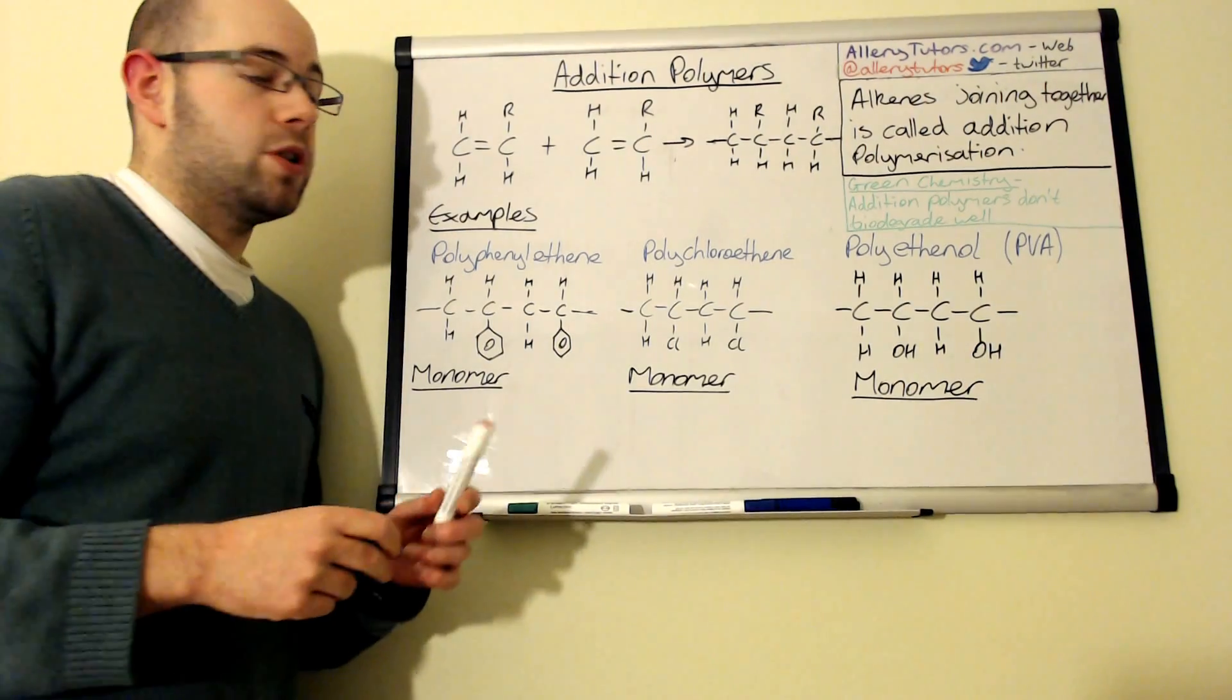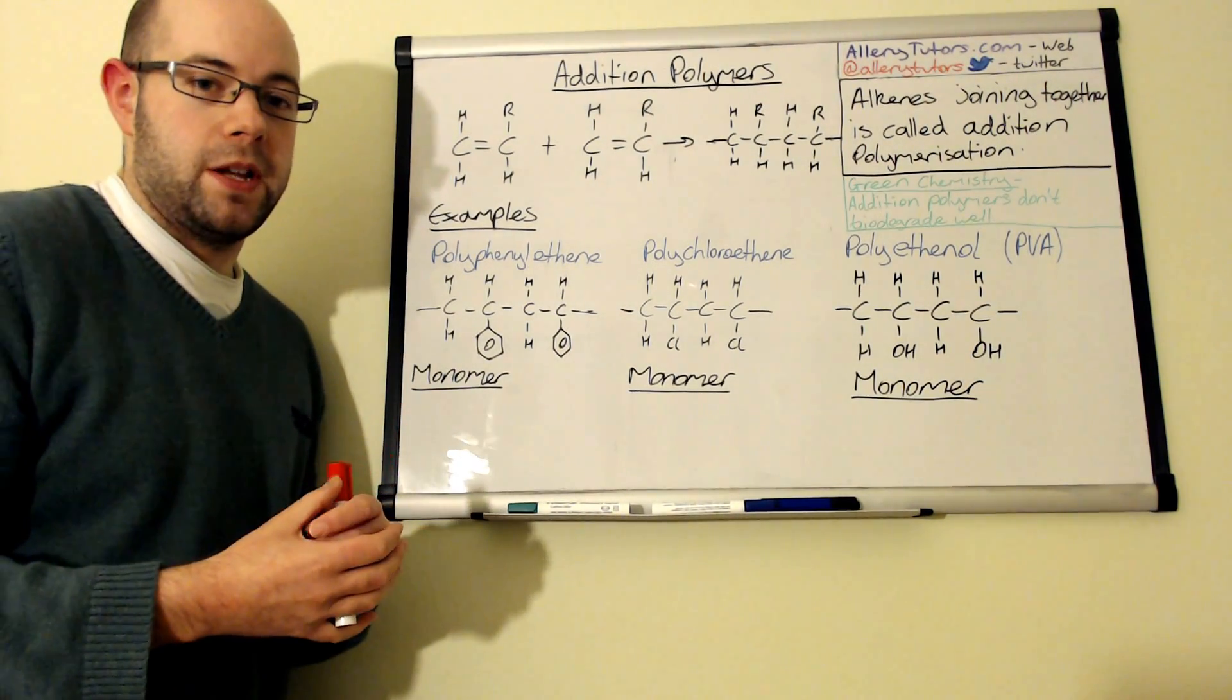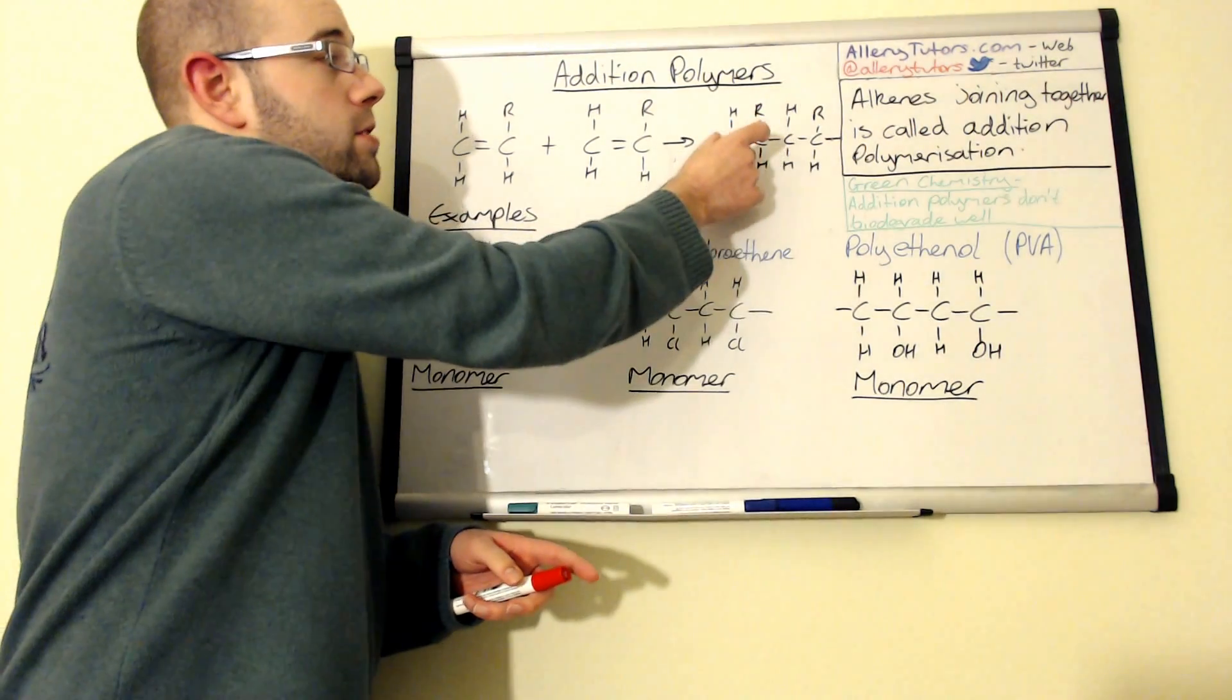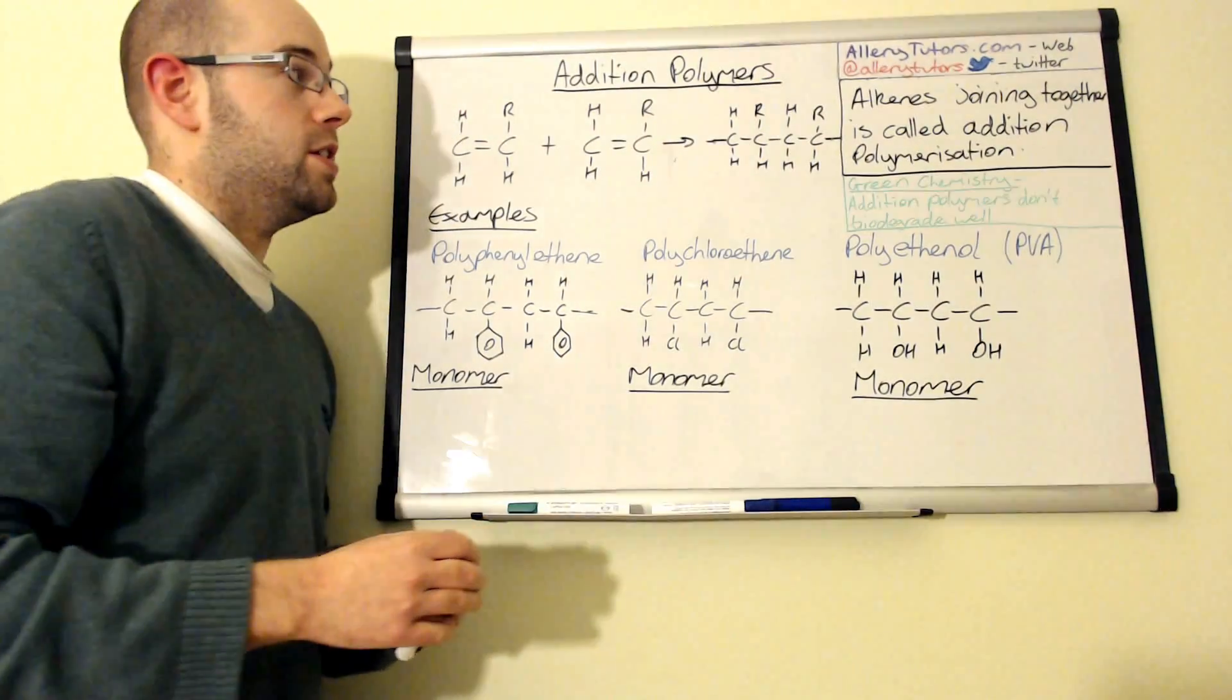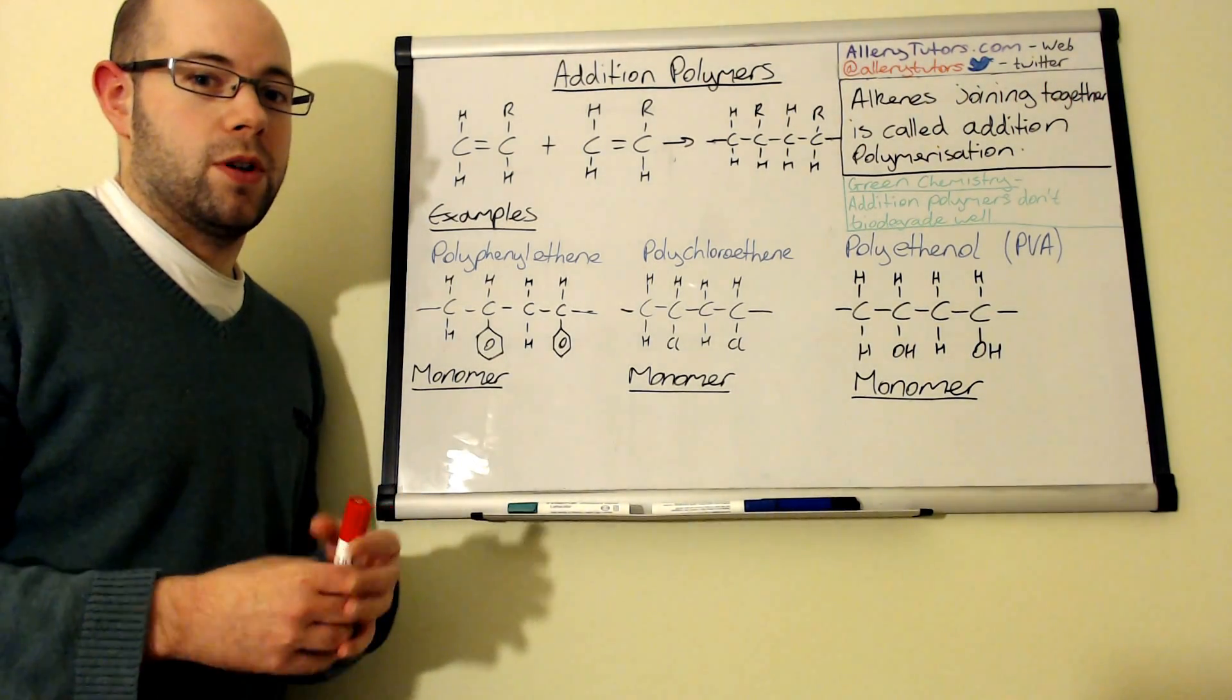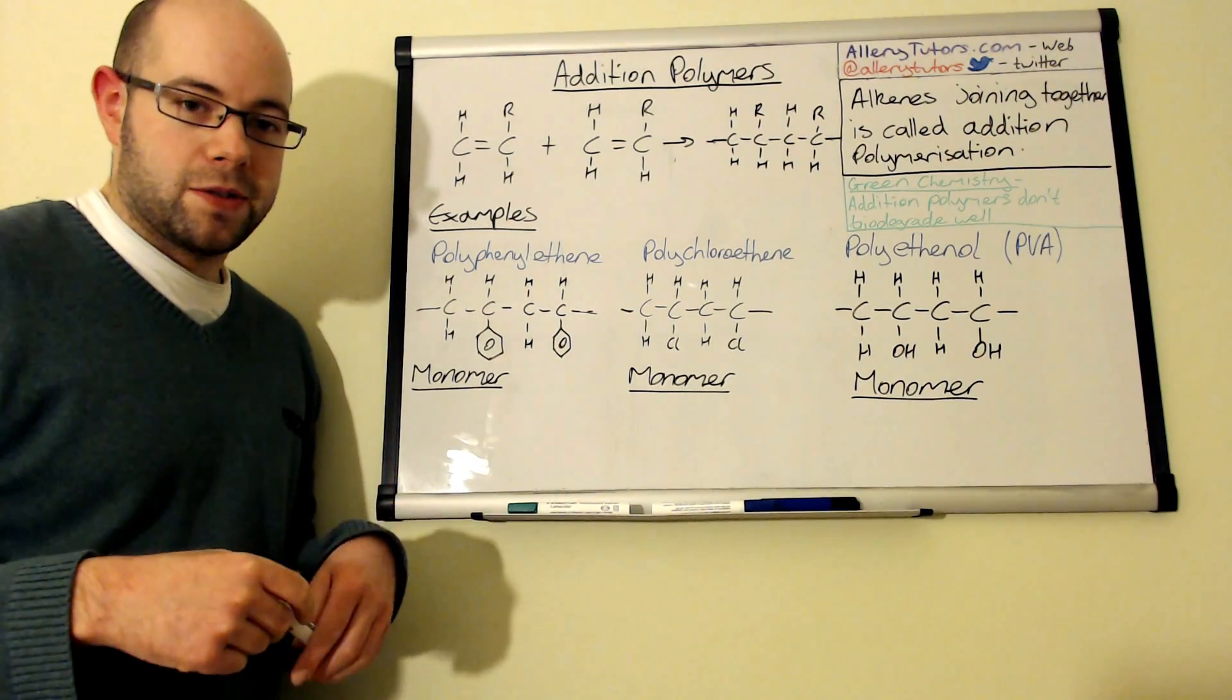We can have something called a repeat unit and you need to be able to identify what the repeat unit is by looking at a polymer chain. The repeat unit is basically the unit that's repeating across the polymer chain, it's like a pattern and that repeat unit will help you to work out what the monomer unit was that made it in the first place.